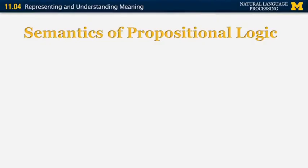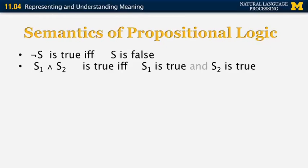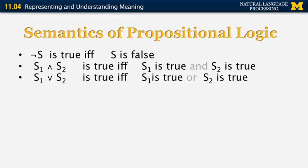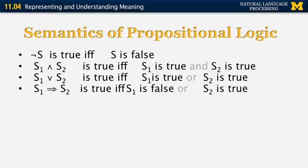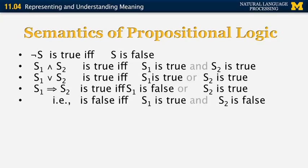Okay, now let's look at the semantics of propositional logic. What are the truth values of the different operators? So, not S is true if and only if S is false. S1 and S2 is true if and only if both S1 and S2 are true. S1 or S2 is true if and only if either S1 or S2 are true. S1 implies S2 is true if and only if S1 is false or S2 is true. And that means that it is false if and only if both S1 is true and S2 is false.